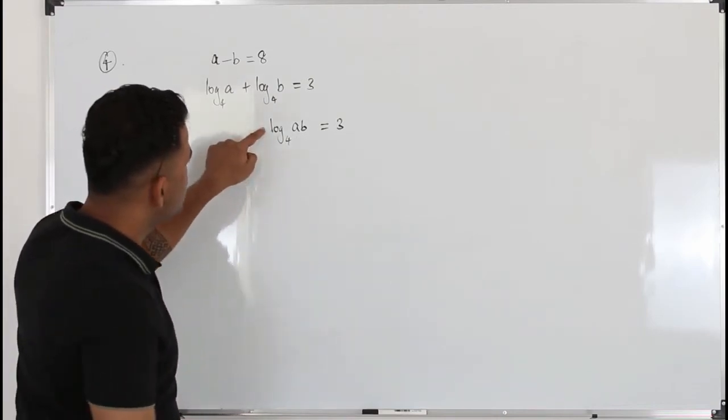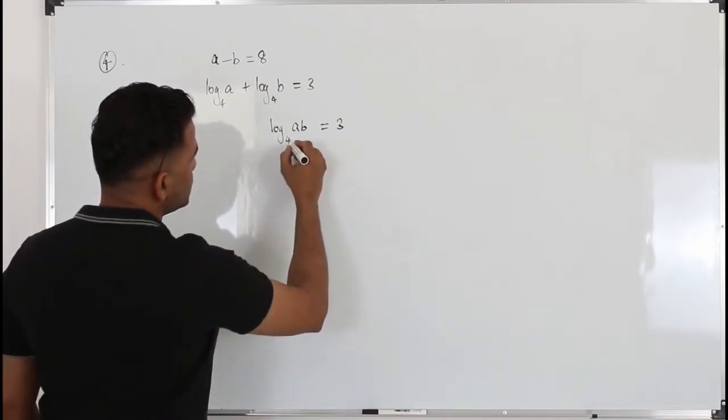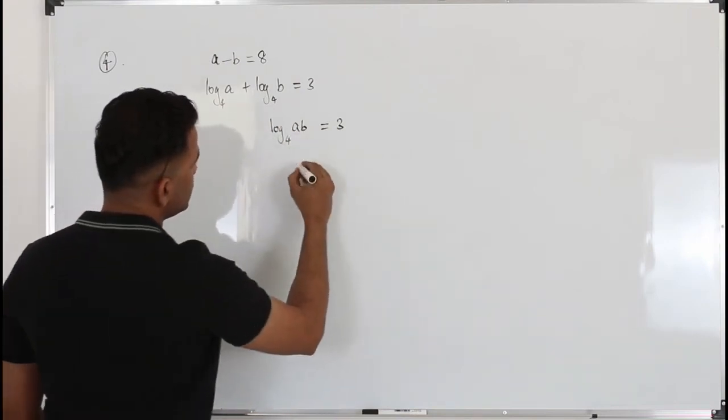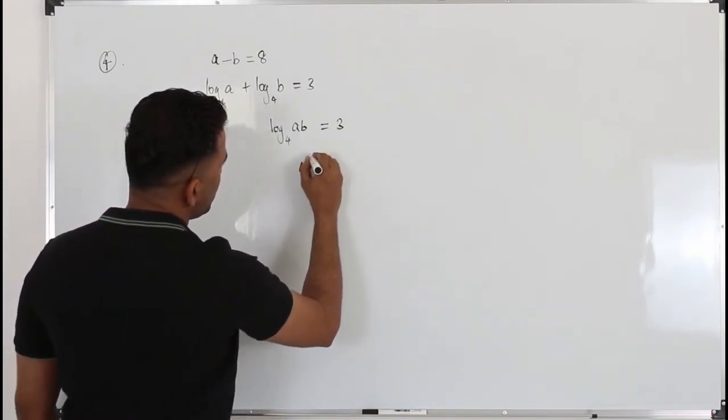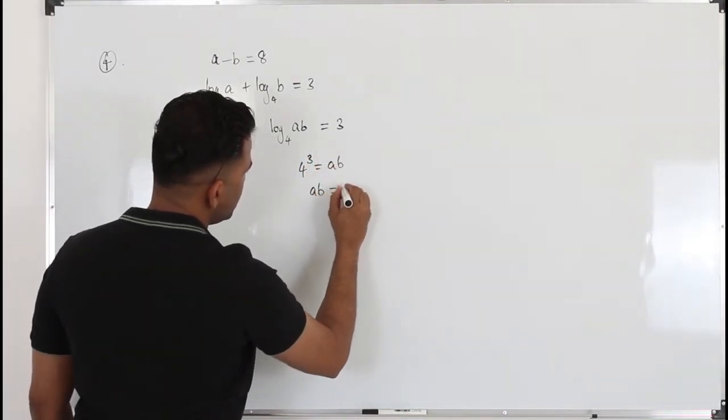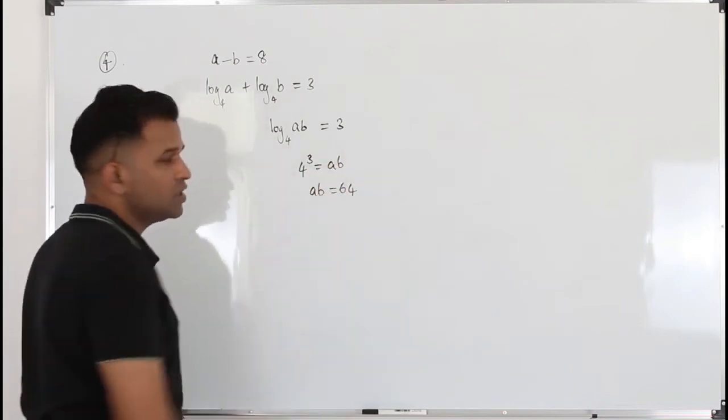Rewrite this using powers. To get rid of this logarithm, we can write it as 4 power 3 equals ab. In other words, ab equals 64. 4 cube is 64.